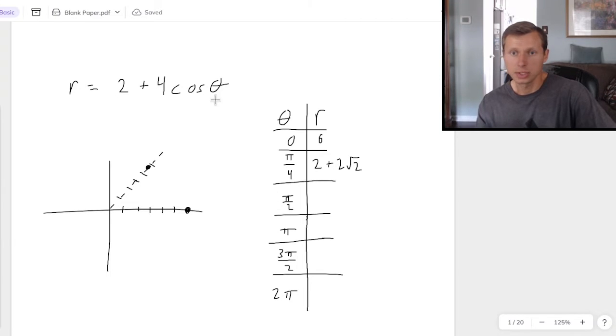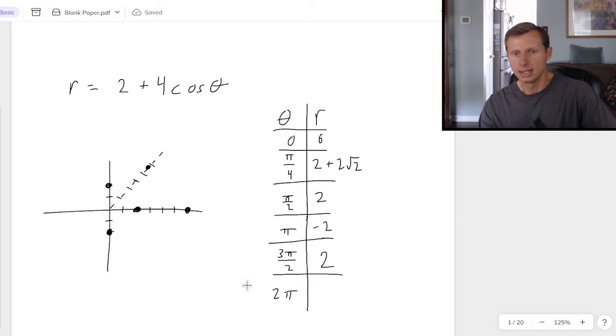Then at pi over 2, the cosine of pi over 2 is 0, and 2 plus 0 is 2. So at pi over 2, just 2 tick marks up, and that'll be right there. At pi, we're going to have a negative radius, negative 2. So if the angle pi is supposed to go to the left, a negative radius means it's going to go to the right, 2. So I'll have a point right there. At 3 pi over 2 is 2. So at the angle 3 pi over 2, we need 2 tick marks down. So we'll get that point right there. And last, at 2 pi, it's the same as 0. We will get 6.